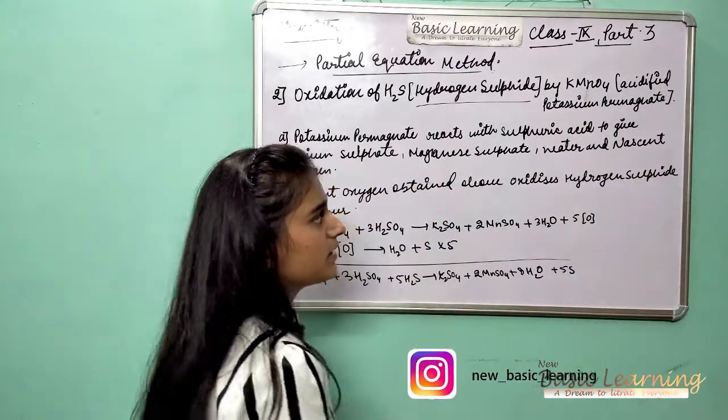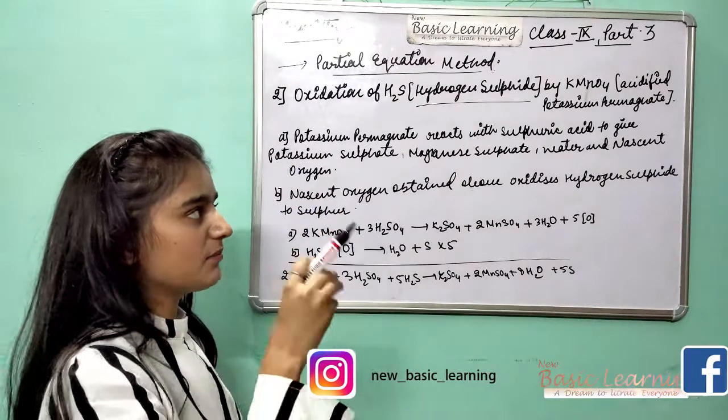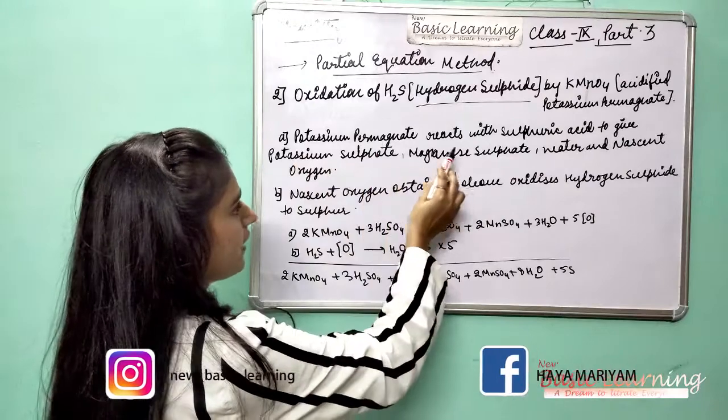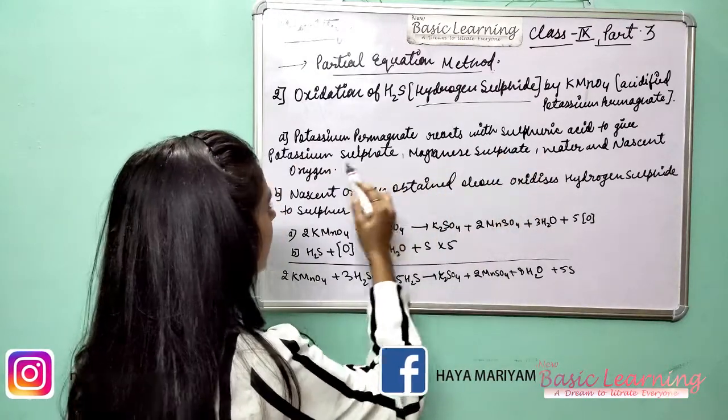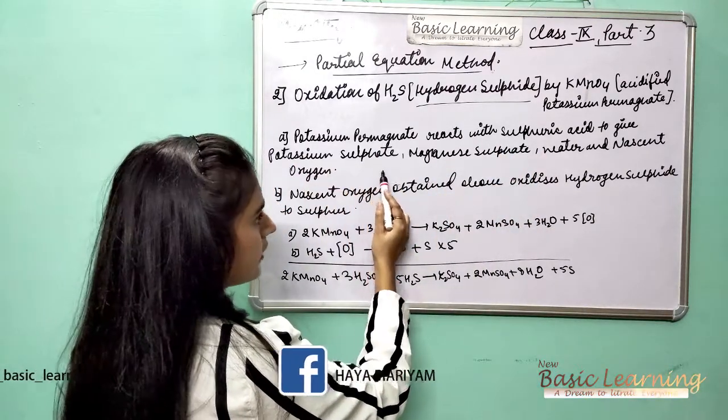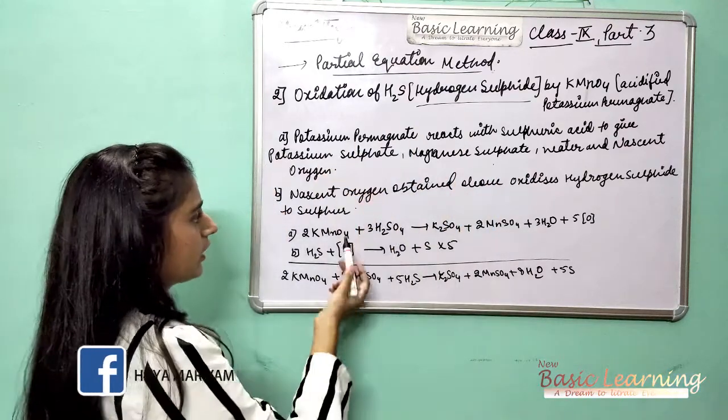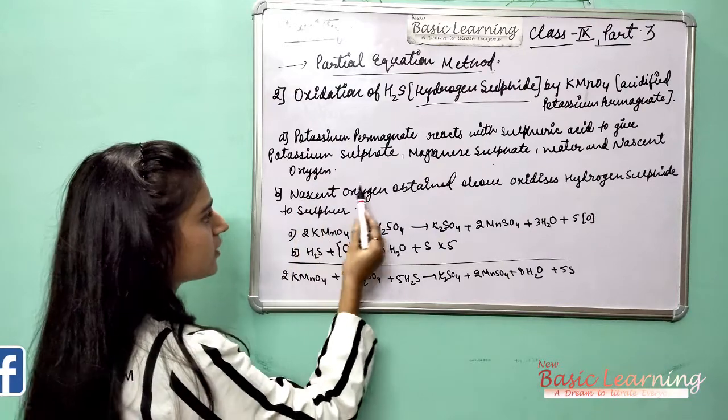So now potassium permanganate reacts with sulfuric acid to give potassium sulfate, manganese sulfate, water, and nascent oxygen. And then the second part is that nascent oxygen obtained above oxidizes hydrogen sulfide to sulfur.